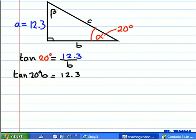Using our algebraic skills, we can state that if we divide both sides by tangent of 20 degrees, then we can isolate the B variable on the left side of the equation, thus giving us the answer of B on the right side.